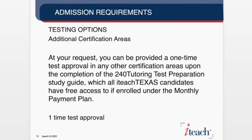The area in which you're enrolled gives you up to five testing opportunities. You are not bound to only that area — so if you were identified as secondary business and finance but have 12 hours in math and want to take the math test, you certainly can. However, you'll have to complete test preparation and you would be given a one-time-only test approval. There are no second attempts for areas outside of your area of enrollment — it is a one-time, limited testing option.